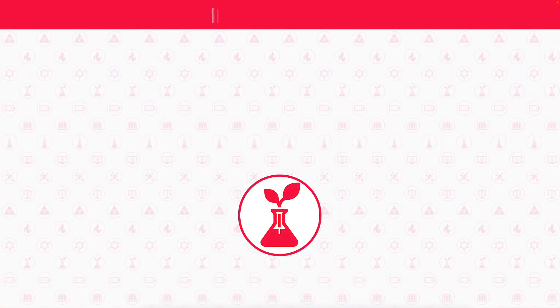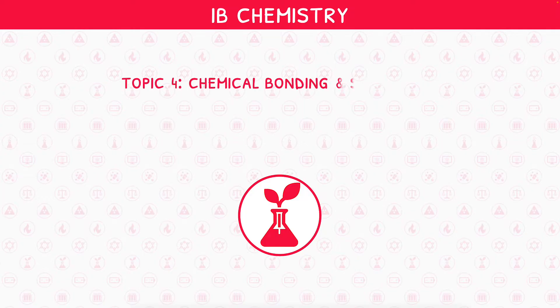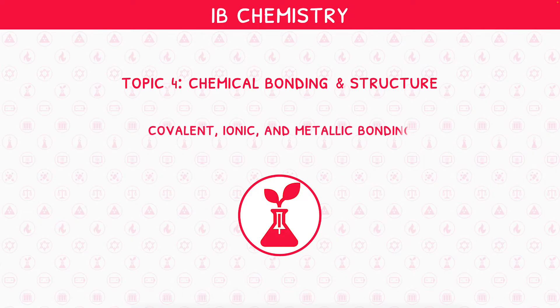Welcome back to our IB Chemistry video series. This is the first video in IB Chemistry Topic 4, Chemical Bonding and Structure, where we will be looking at covalent, ionic and metallic bonding. This video will build on your GCSE or MYP knowledge. Let's start by looking at the most common type of bonding: covalent.